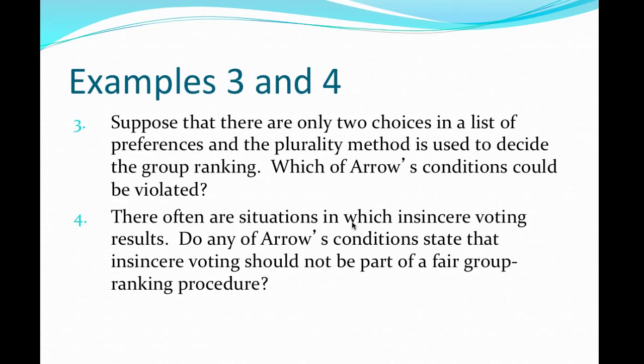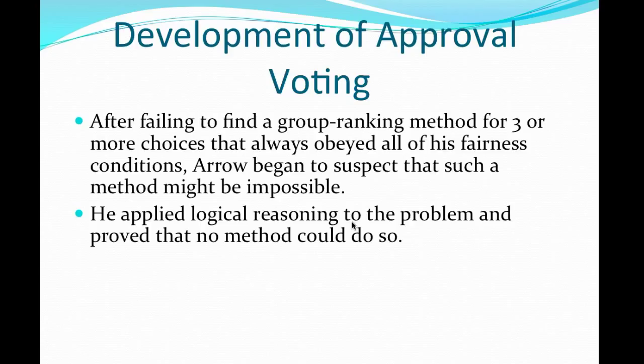Examples three and four we'll do in class. What Kenneth Arrow decided was that these five conditions he set up — there is no voting system that satisfies all of them. He couldn't find a group ranking method for three or more choices that always obeyed all of his fairness conditions, and he began to suspect that such a method might be impossible.